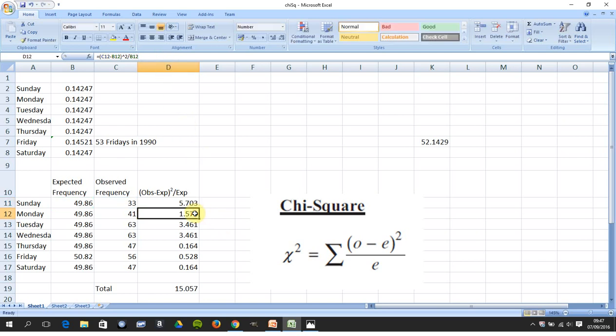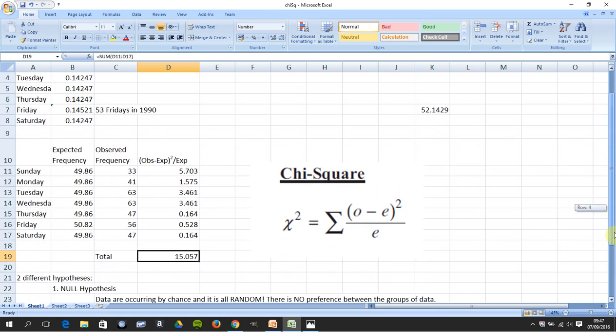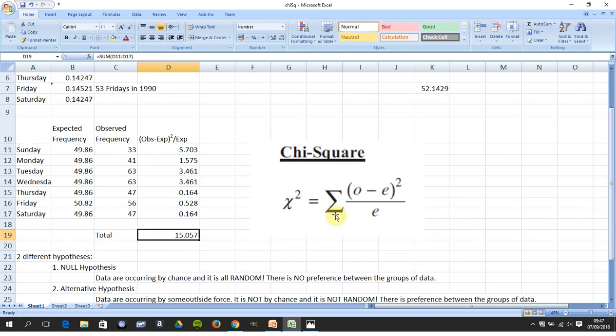You would do the same calculation and you would add them all up. And when you add them all up you get 15.057, so just in case that sigma there means sum up.